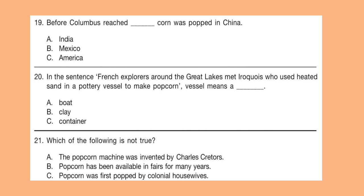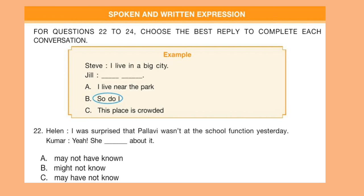Question 20: In the sentence, 'French explorers around the Great Lakes met Iroquois who used heated sand in a pottery vessel to make popcorn,' vessel means a dash. Question 21: Which of the following is not true? Look at the options and select your answer.